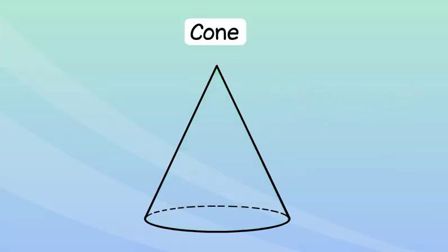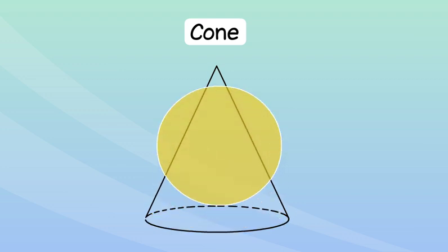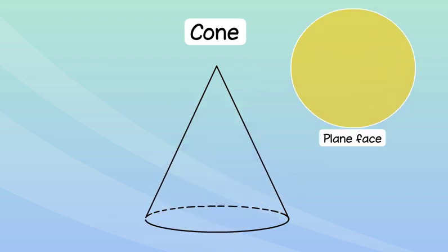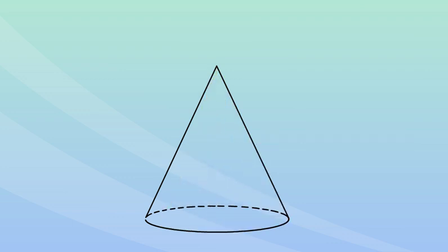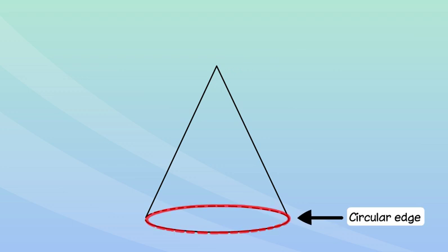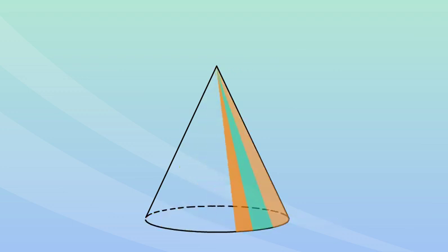A cone has one plane face which is its base. A cone has one curved surface. A cone has one vertex and one circular edge where the curved surface meets the plane surface.